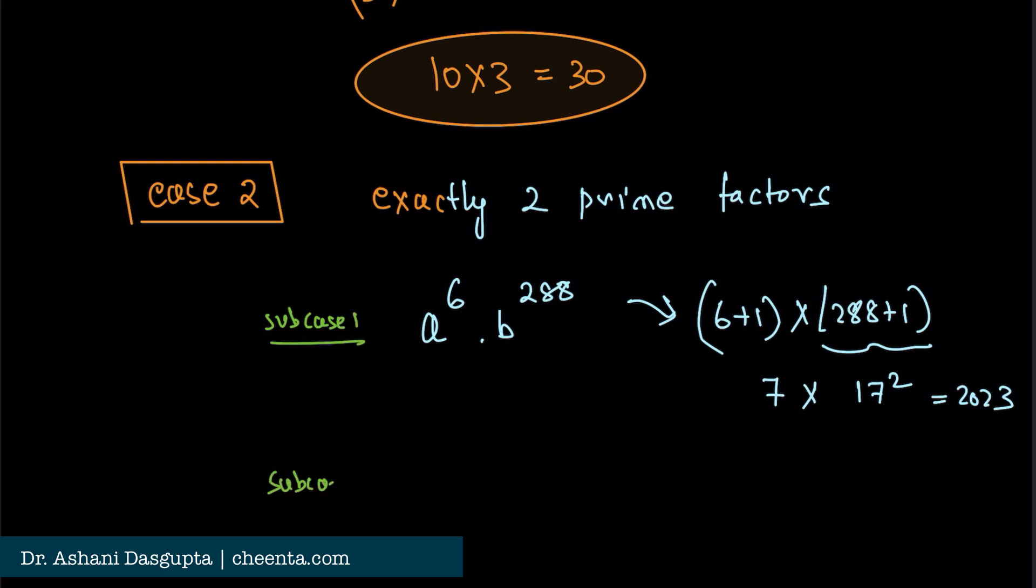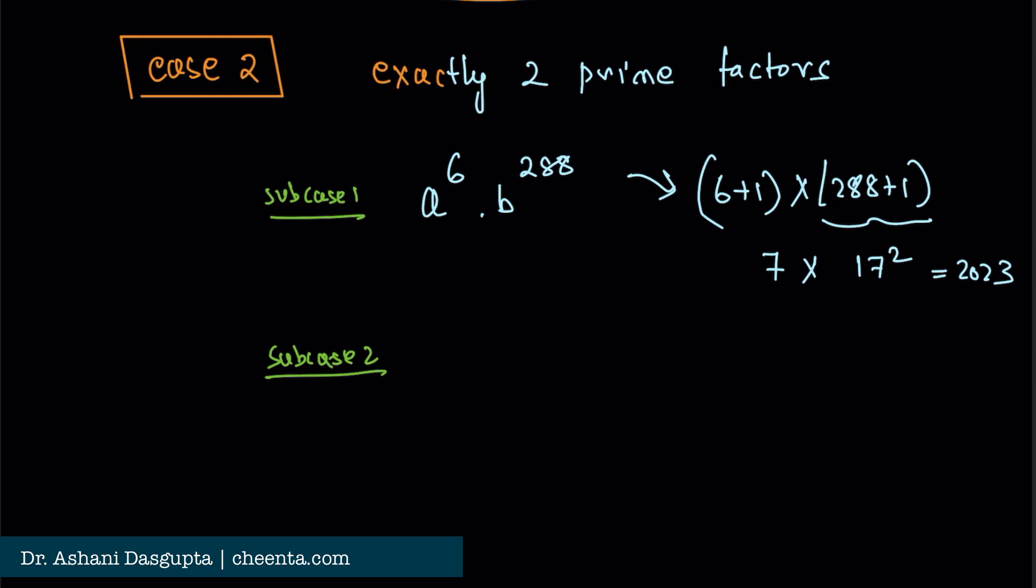Then subcase 2 is simply a^16 × b^(7×17-1), which is a^16 × b^118. Again, we will have the number of divisors (7×17-1+1) × (16+1), which is again 2023.